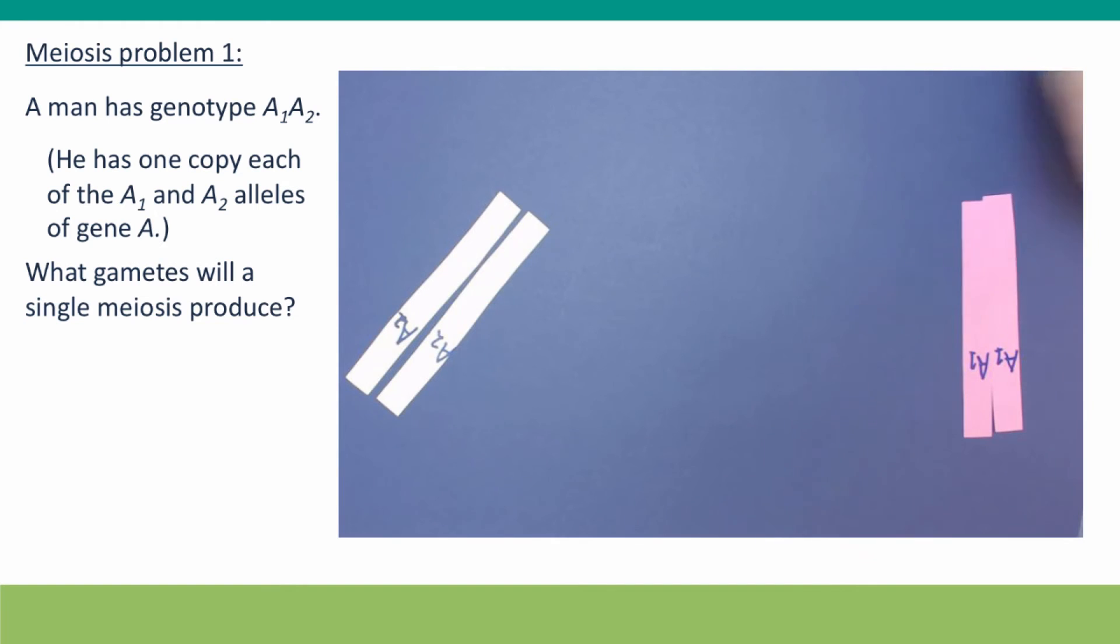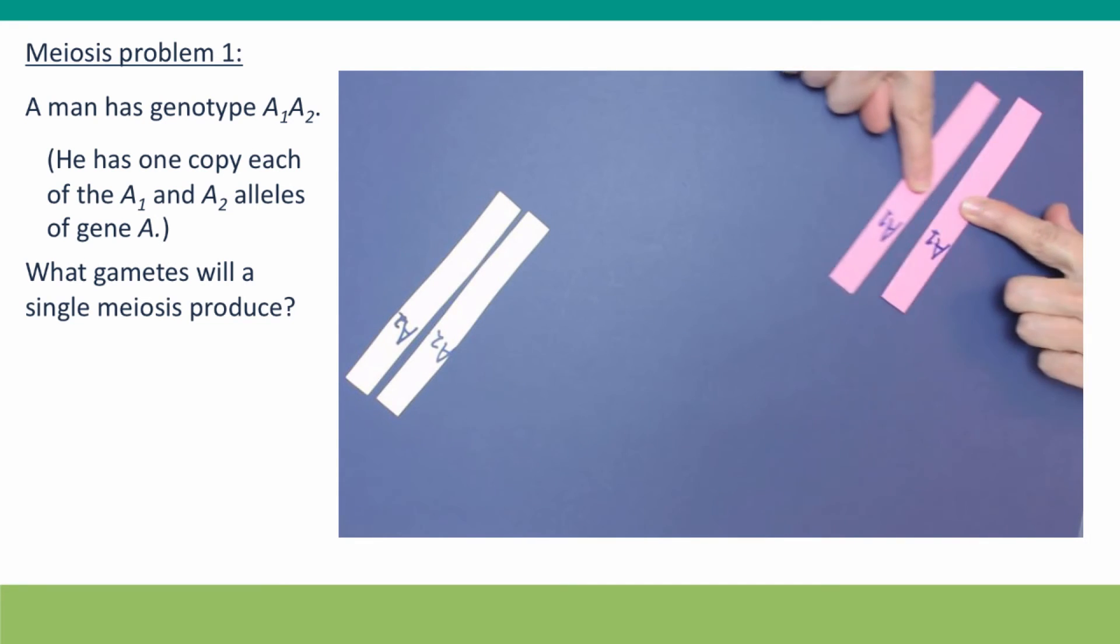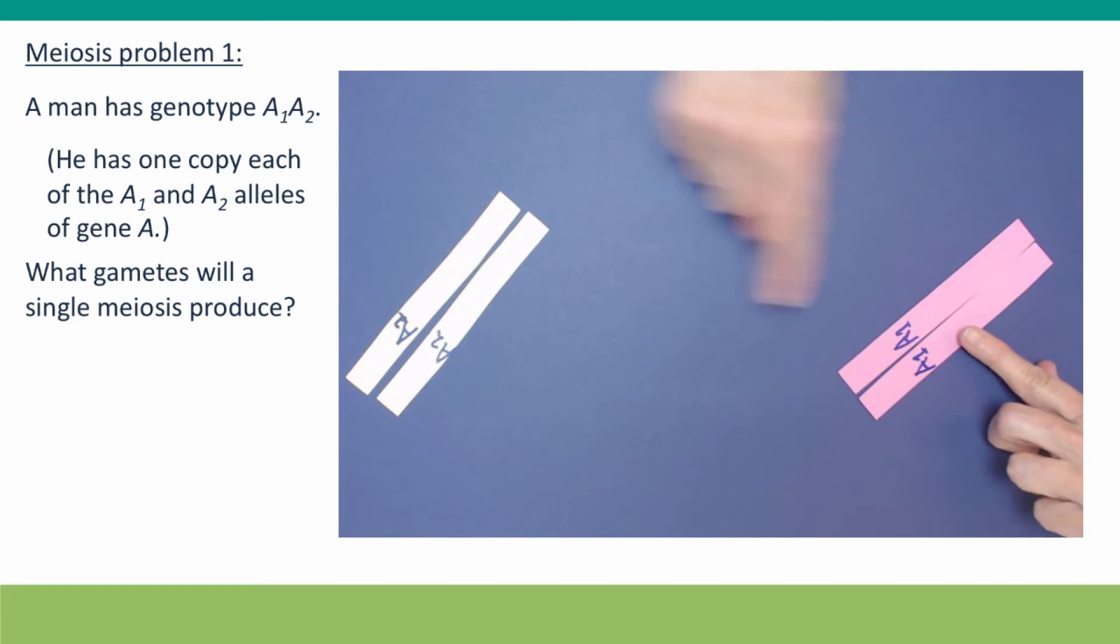Meiosis II, as we said, is just like mitosis. The two sister chromatids are held together by loops of cohesin, they're attached by spindle fibers, and moved to the center of the cell.